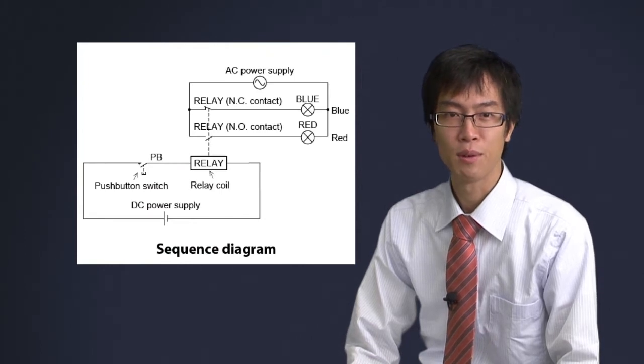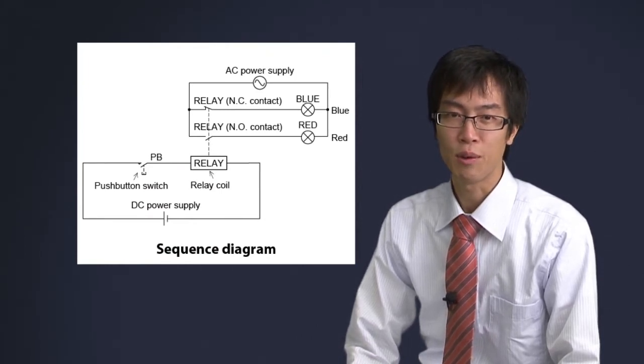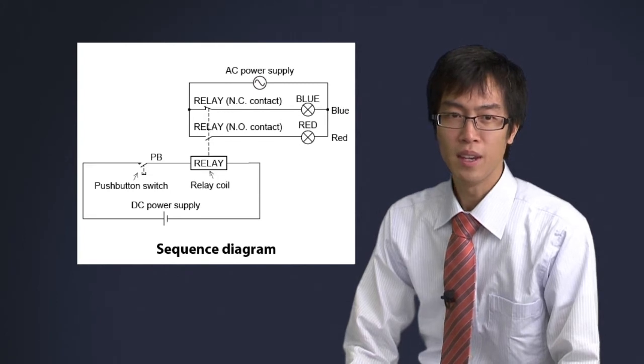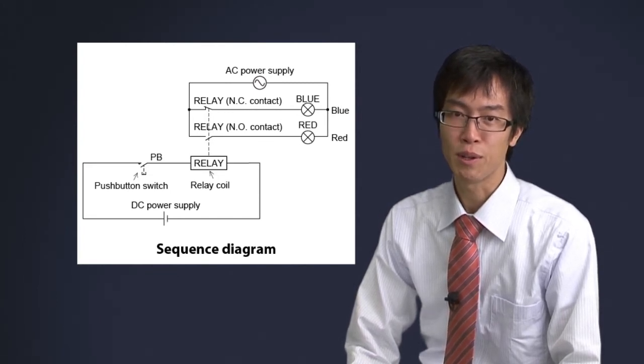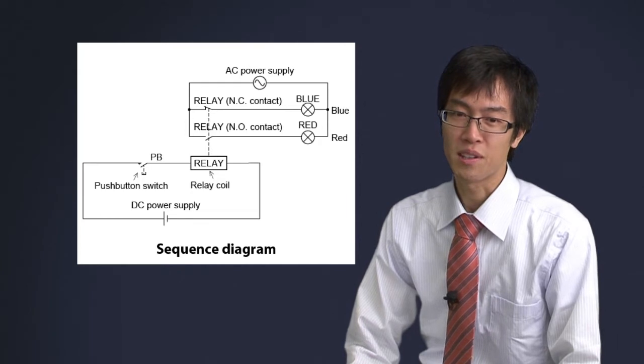And so, we use sequence diagrams to more easily understand the order of operation. In sequence diagrams, contacts and relays are arranged in order of operation and connected by straight lines. This drawing is standardized and can be understood by any third party.